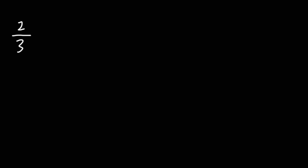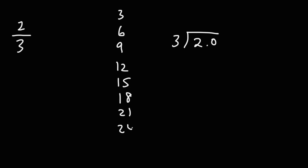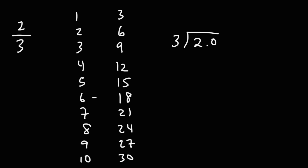What about this one? Let's say you have 2 over 3 — go ahead and convert that into a decimal. So we're dividing 2 by 3. 3 doesn't go into 2, so we need to add a decimal and a 0. How many times does 3 go into 20? Let's write the multiples of 3. 3 times 10 is 30, so I'm going to stop at 30. 3 goes into 20 six times — 18 is the highest multiple of 3 just under 20. So this is going to be 3 times 6, giving us 18. Let's add the decimal point. 20 minus 18 is 2.